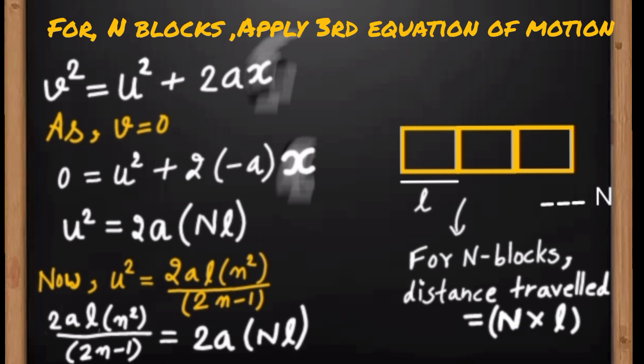So let's calculate it using third equation of motion. We know that final velocity becomes zero after passing through N blocks, and the width of one block is l. So N blocks have a width of N·l, and the distance traveled will equal N·l.